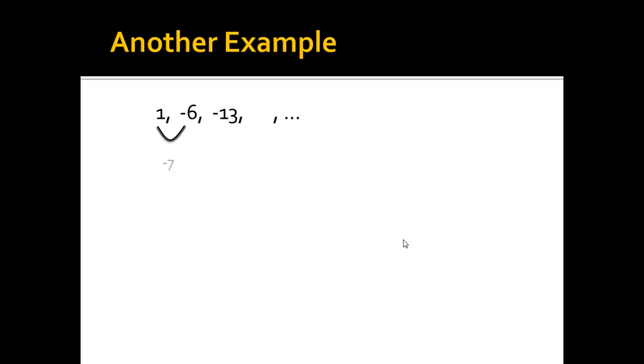Well, from one to negative six, I'm subtracting seven. And then from negative six to negative thirteen, I'm subtracting seven again. So, I'm noticing the pattern. So now, to get from negative thirteen to that next term, I know I'm going to have to subtract seven, which means I'm going to get negative twenty. And to keep going, I would just keep subtracting seven. Or you could think of it as adding negative seven.